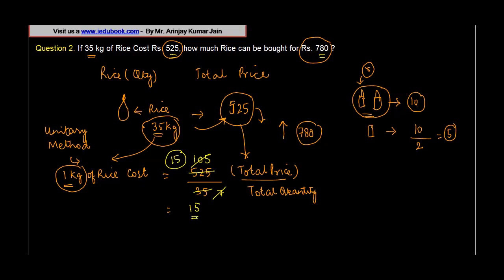costs rupees 15. So 1 kg costs rupees 15. How much can I buy with 780? 1 kg I can buy for rupees 15, or in other words, 15 rupees can be used to buy 1 kg. So 780